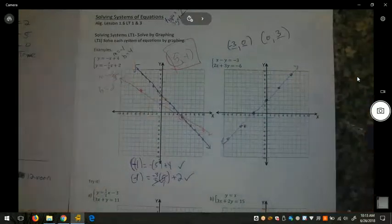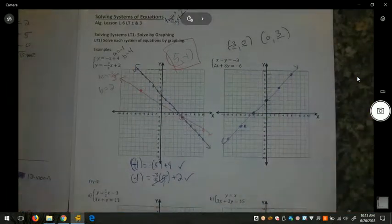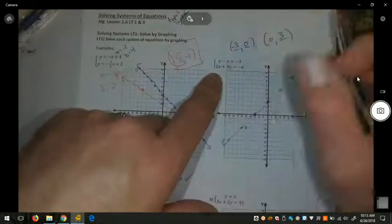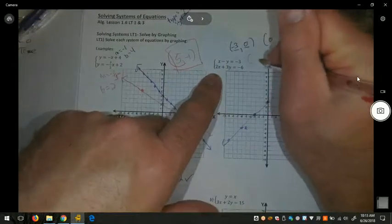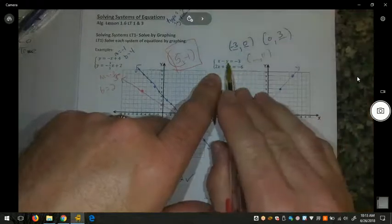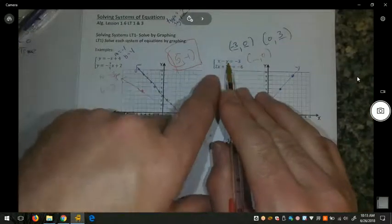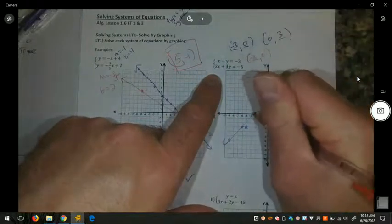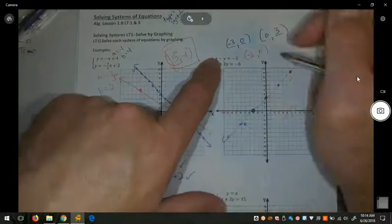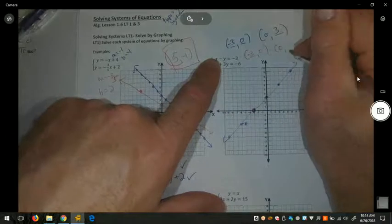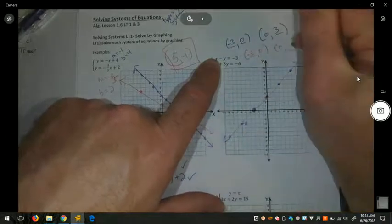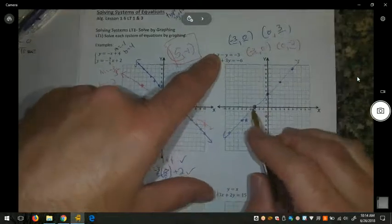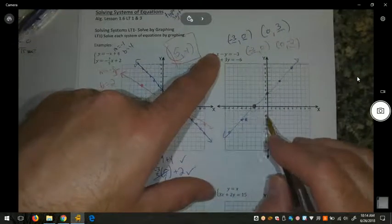For the next one, when I cover up this and to get the x-intercept, plugging 0 in for y, negative 6 divided by 2 is negative 3. Hey, there's the solution. When I cover up the x to find the y-intercept, divide by 3, I get 0, negative 2.